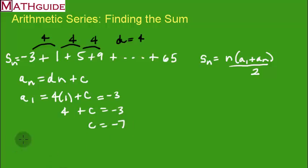So now our specific formula is known. It's our D value times N, and then our constant, negative seven.